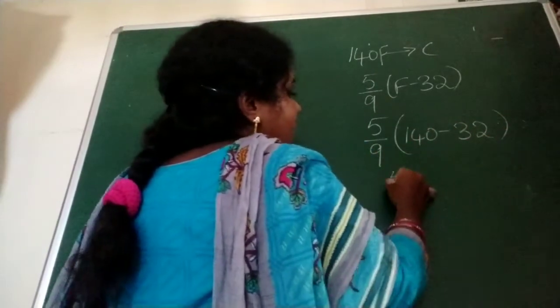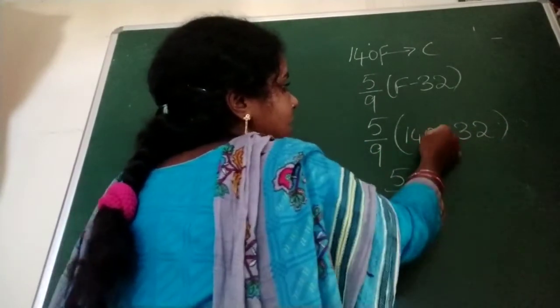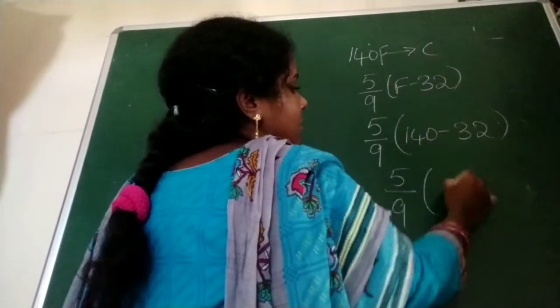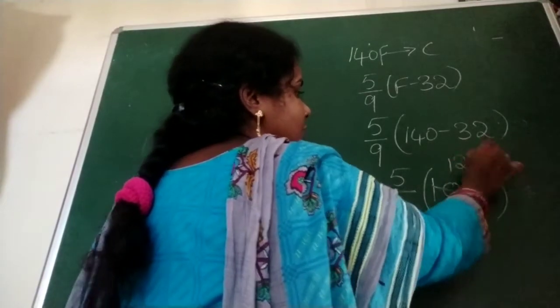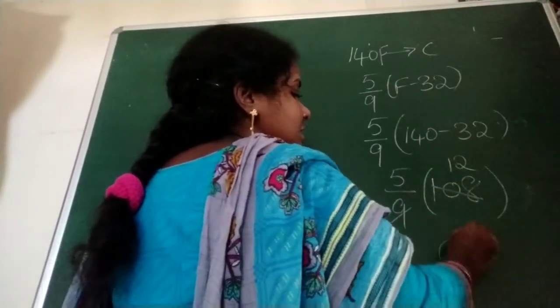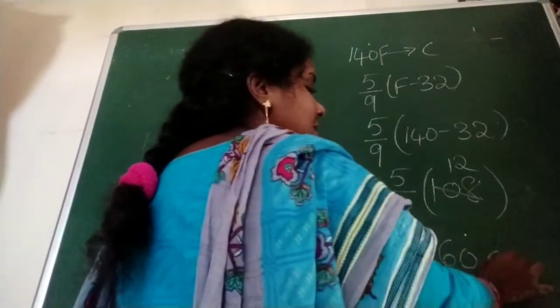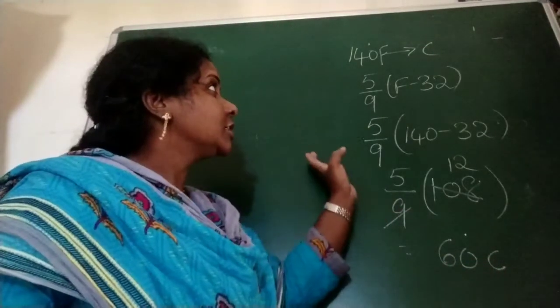5 by 9, 140 minus 32 is 10 minus 2 is 8, 3 minus 3 is 0, 1. 1 not 8. 9 ones and 9 twelves, 1 not 8. 5 twelves is 60. 60 what? 60 degrees Celsius, because they ask convert into degree Celsius.